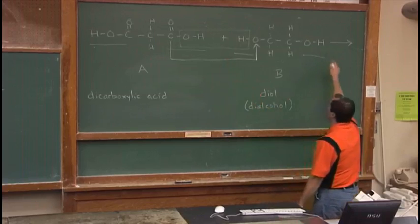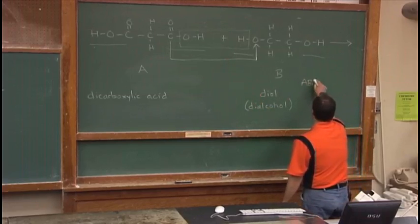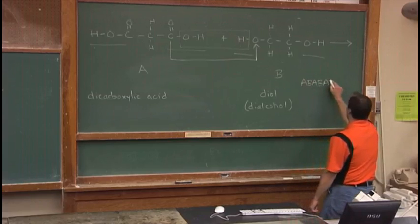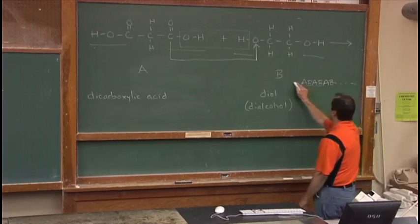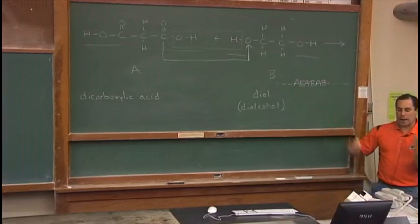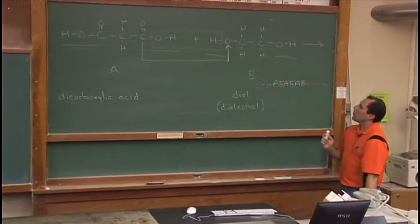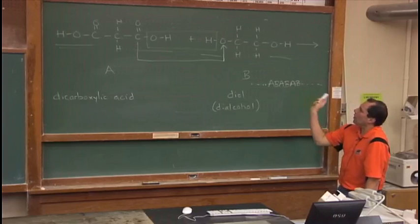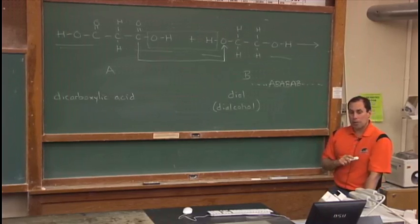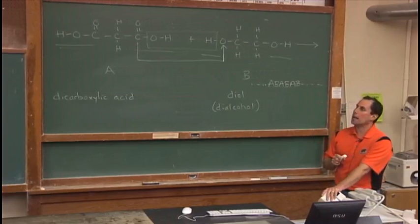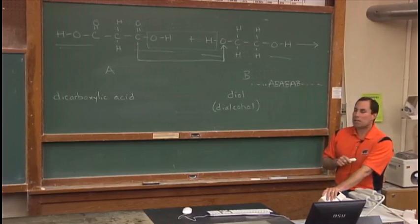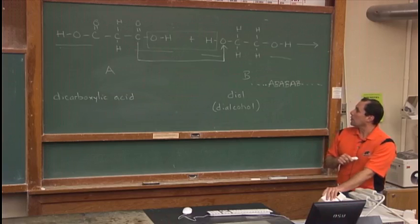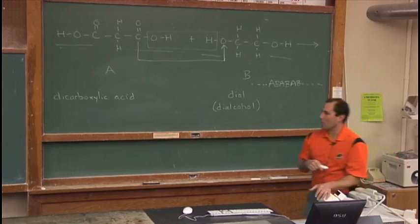So when these two react, we're going to make A, B, A, B, A, B. And it's going to make a long strand. Turns out that when we go ahead and make this, we're going to make a long strand. And it's very similar to the material that they like to use when making things like backpacks and disco slacks and all sorts of fabrics. So, make a polymer.